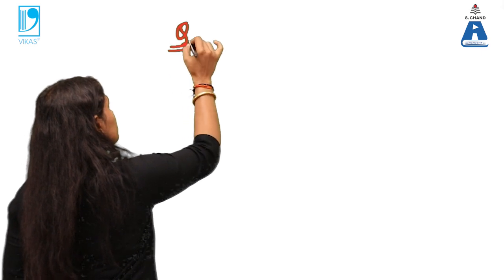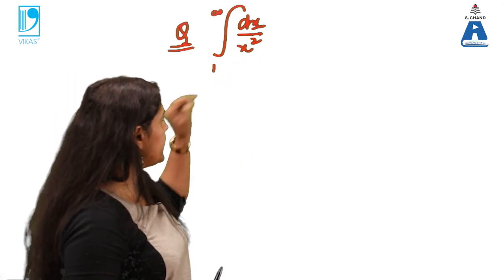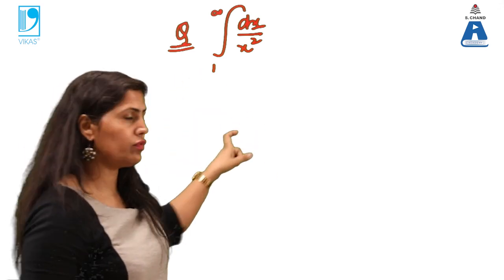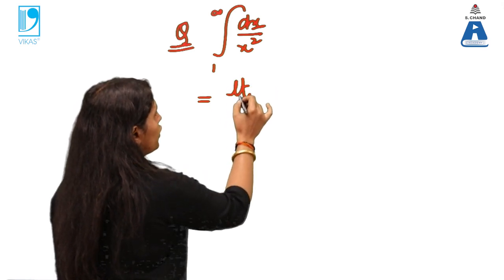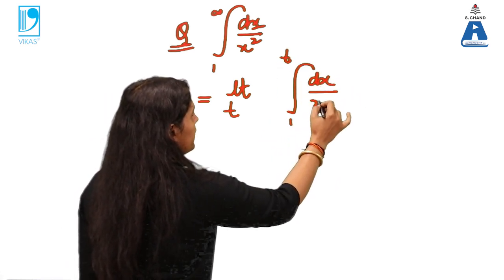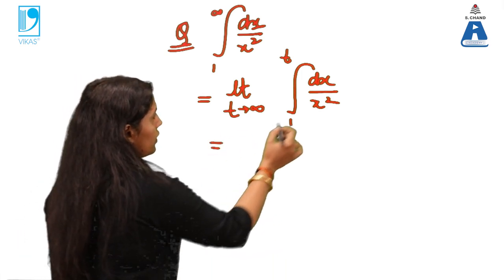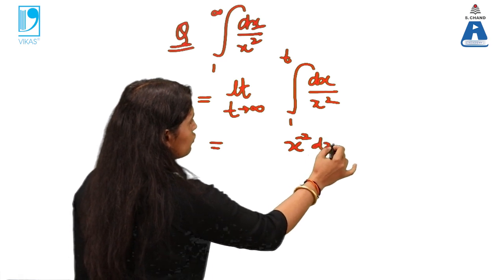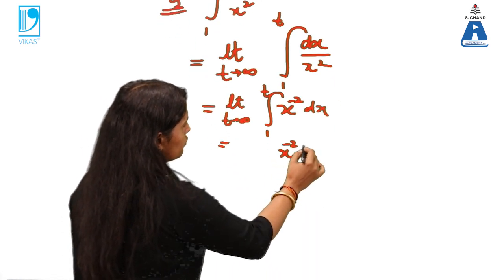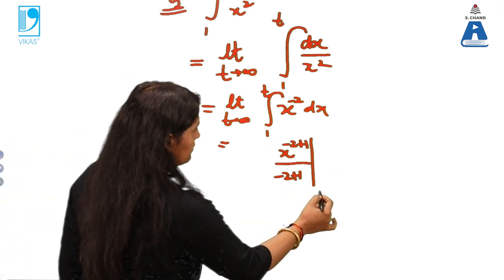My very first question is, if you see in the part one I took dx by x, the same limit, it is improper, that was also improper. But this time you just see the difference for only because of the power. As I told you, whenever the limit is infinite, I will introduce a variable t, 1 to t dx by x square instead of infinity. I am writing t and t obviously will tend to infinity. And now, 1 by x square, I can write as x to the power minus 2.